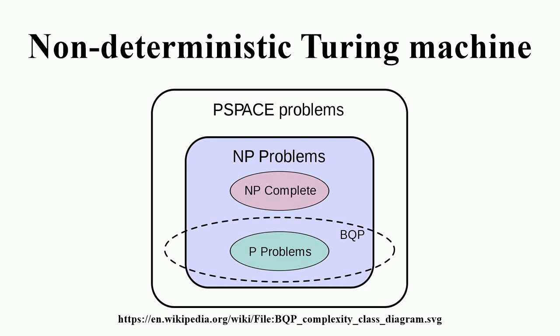In theoretical computer science, a Turing machine is a theoretical machine that is used in thought experiments to examine the abilities and limitations of computers. In essence, a Turing machine is imagined to be a simple computer that reads and writes symbols one at a time on an endless tape by strictly following a set of rules. It determines what action it should perform next according to its internal state and what symbol it currently sees.